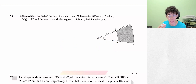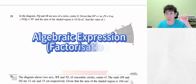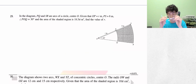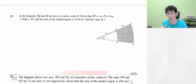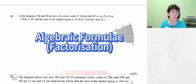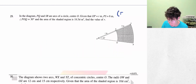This question includes two more things: number one, it includes algebraic expression relating to factorization, and algebraic formula is another chapter we're going to use. Also, pi equals 22 over 7 is given — thank you Katie for pointing that out. Okay students, let's start the question.